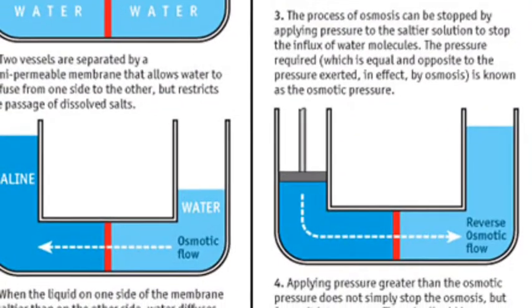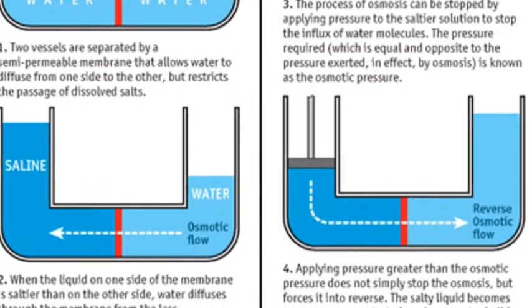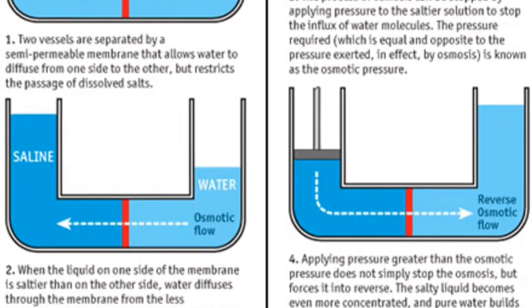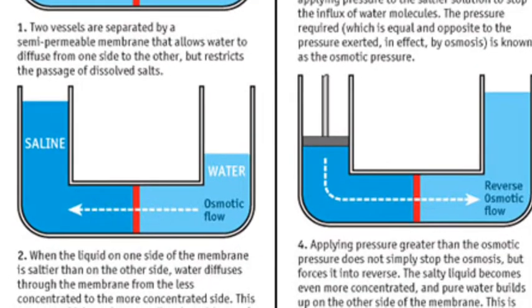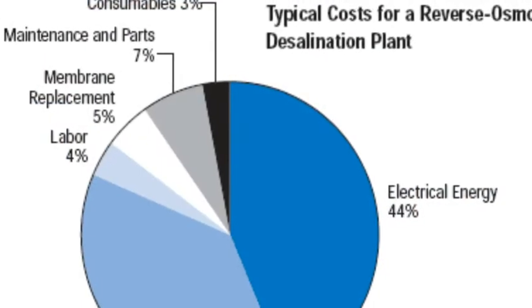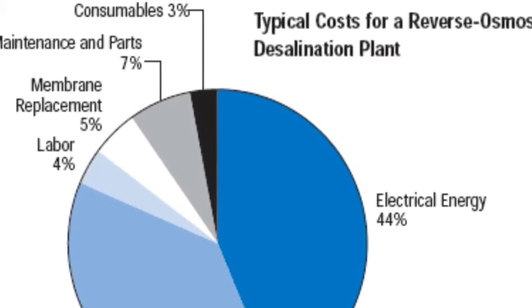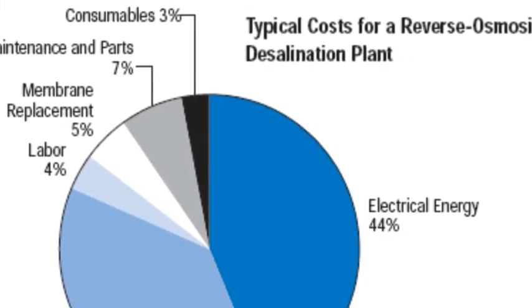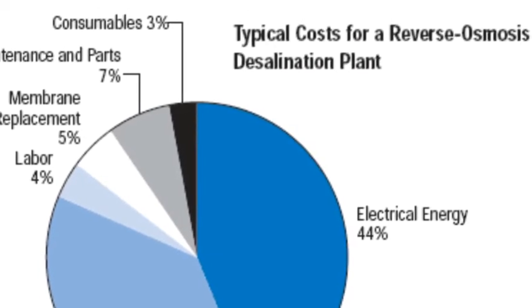Desalination is removing salt and minerals from water to make it drinkable. Modern interest in desalination is focused on providing cost-effective fresh water to areas where fresh water is limited. Unfortunately, large-scale desalination typically uses extremely large amounts of energy, as well as specialized, expensive infrastructure, making it very costly.